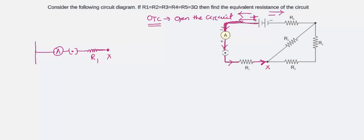Now the other end of R1 — let this be point X. At point X, if you observe, till now there was only one wire coming in, but from point X there are two wires going out. That means there is a branching at point X. So here I make two branches: one branch goes to R2, and the other wire is connected to R4. There is no further branching, only bending.